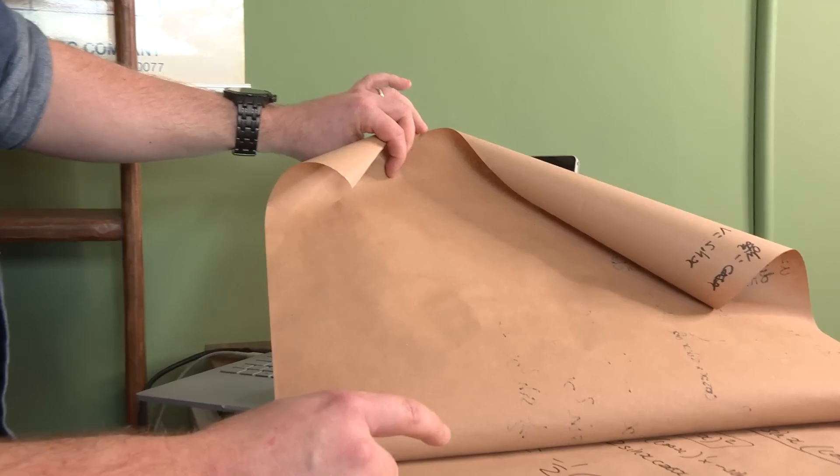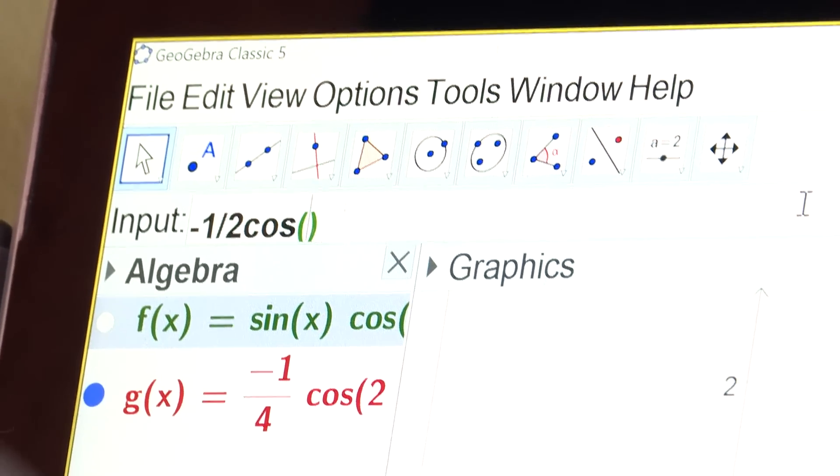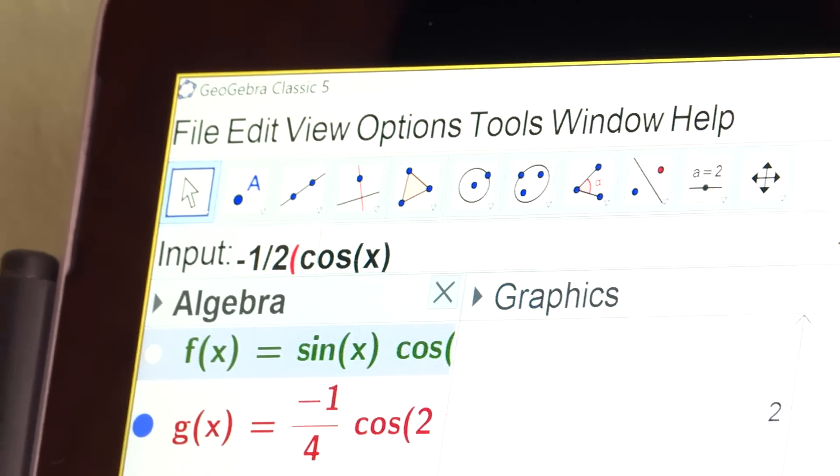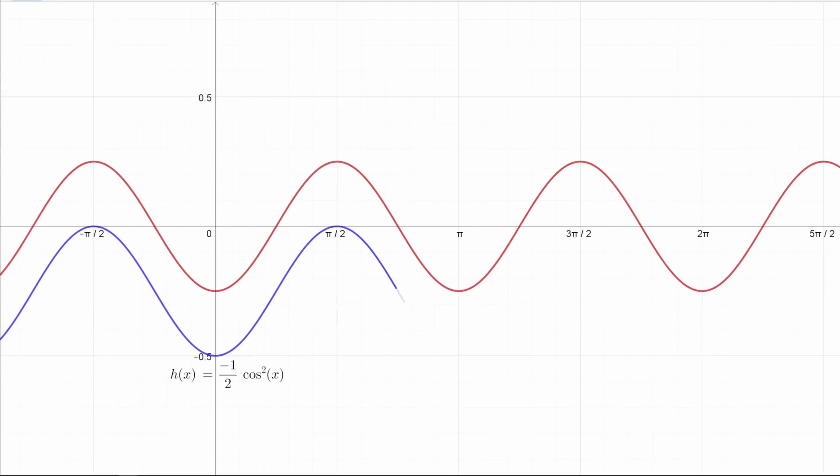Negative a quarter times cosine of 2x. That is what the answer should look like, apparently, according to method one. Method two got us negative a half cos squared x. Let's plot that one. If they're the same answer, this should be the same function, right? So negative a half cos x, and I'm going to put that in brackets and square it. Because notation gets confusing, we've already been through this. Yeah. What's nice is that it looks the same pattern, but it's not the same function. It's shifted.